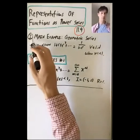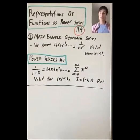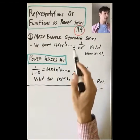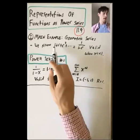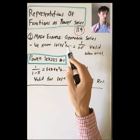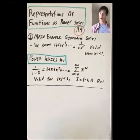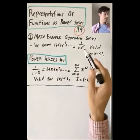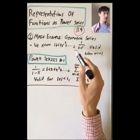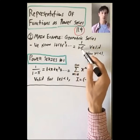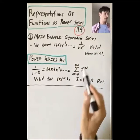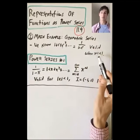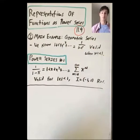Our main example that we're going to start with and really emphasize is the example of geometric series. We know that you can take 1 plus r plus r squared plus r cubed plus all the powers of r. This geometric series equals 1 over 1 minus r whenever the series converges. This is valid when the absolute value of r is less than 1.